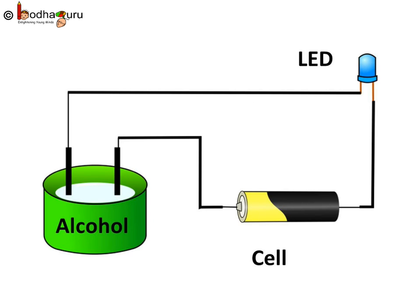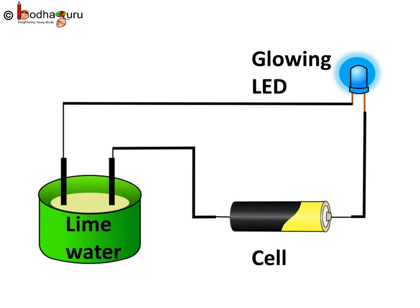If we take alcohol or glucose solution in the cap, the LED will not glow. This means they do not conduct electricity. Now if we do the activity with lime water, that is calcium hydroxide solution, the LED will glow. This means the alkaline solution conducts electricity.